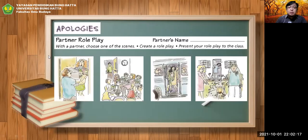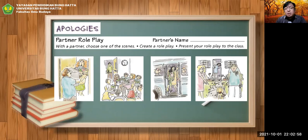The next subtopic is Apologies. With a partner, choose one of the scenes — A, B, C, or D — and create a role play. For example: 'Oh excuse me, I'm sorry, I brought so many items into this room.' 'That's fine, but you need to be careful when you step in.' Or: 'Oh my god, I came late. My friends are waiting.' 'Man, why do you come late all the time?' Be as creative as possible — it's not going to be that difficult.